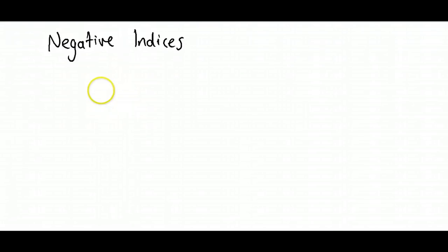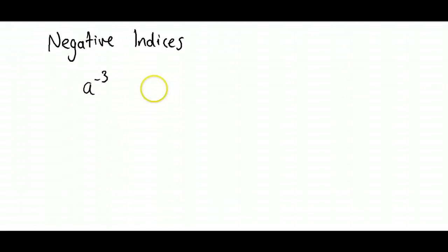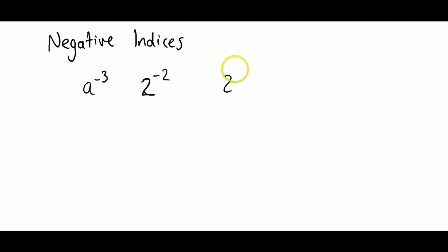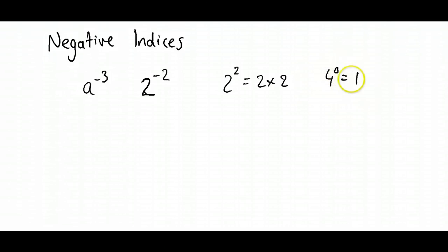In this video we're going to look at how to work with indices where the index is a negative number. For example, something like a to the negative three or two to the negative two. So far we've only been looking at positive indices or indices that have zero — like two to the power of two, which equals two times two, and four to the power of zero, which equals one. Anything to the power of zero equals one. So what do we do with these negative indices?